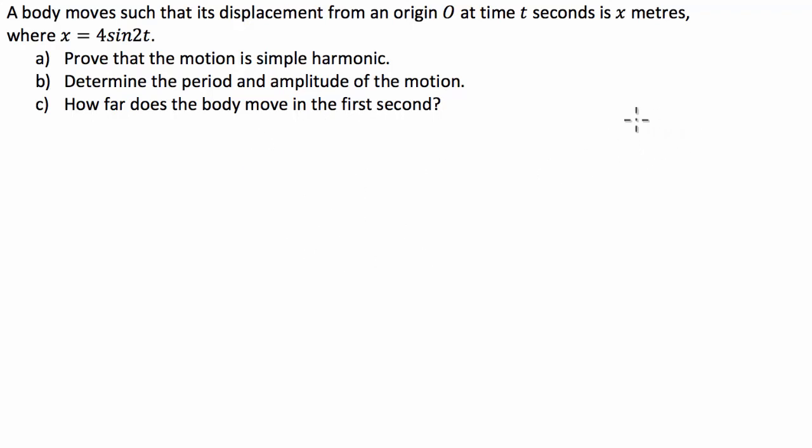G'day guys, we've got a calculus question today, more specifically, simple harmonic motion. The question says that we have a body moving such that its displacement from an origin O at time t seconds is x metres, where x is equal to 4 sine of 2t.